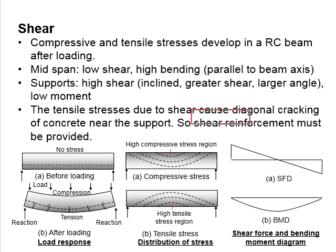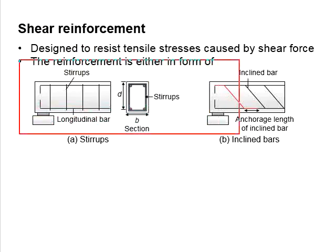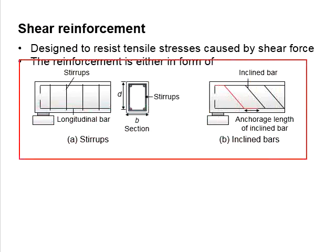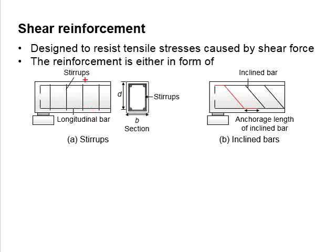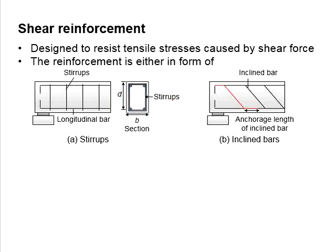Therefore, shear reinforcement is required. These are the typical shear reinforcement that can be applied to a reinforced concrete beam. It can be in the form of a stirrup or in the form of an inclined bar. This cross-section shows a typical arrangement of the stirrup. When the inclined bar is provided, adequate anchorage length is to be provided.